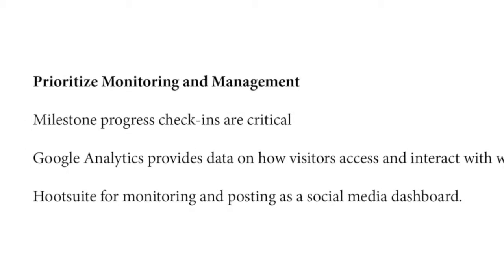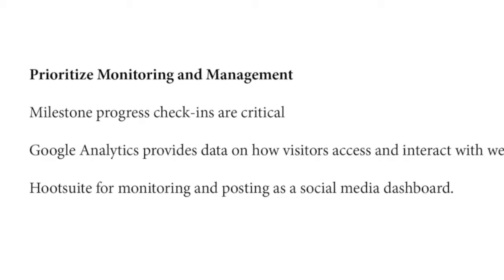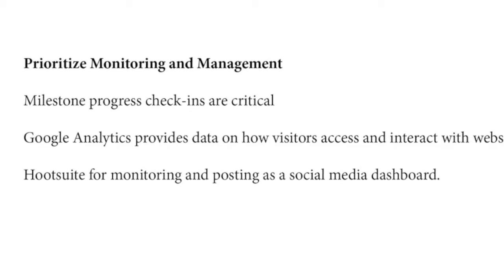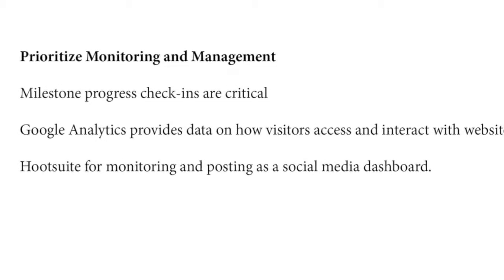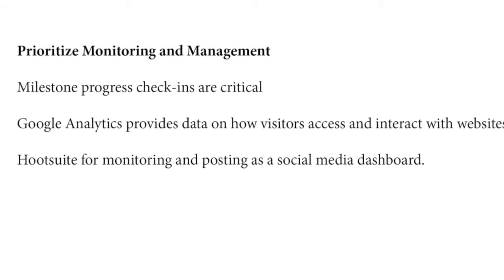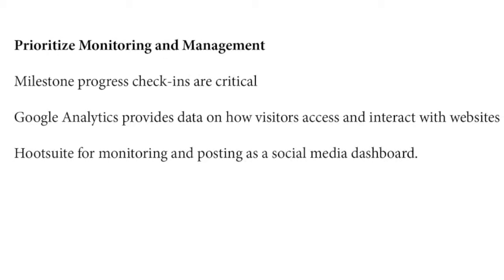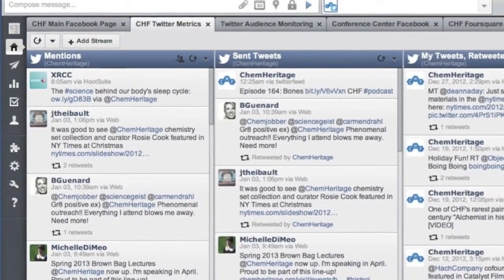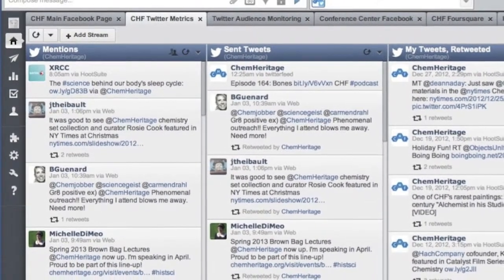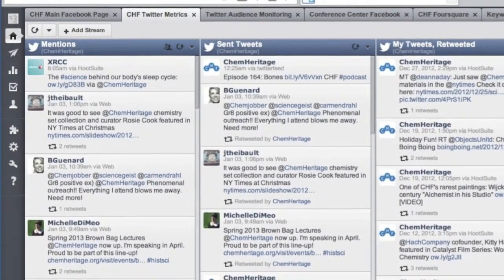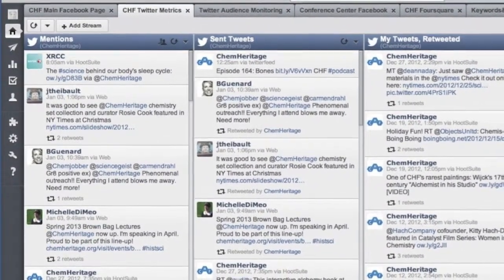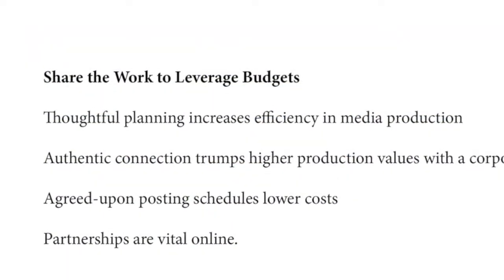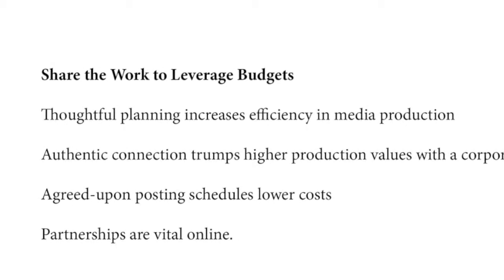Another commonality these organizations share is that they prioritized monitoring and management of their online engagement. Milestone check-ins are critical to the success of each project. Google Analytics is widely used for evaluation of website traffic, providing a deep level of data on how visitors access and interact with websites, including social media's impact on traffic. For social media monitoring and posting, Hootsuite was used by most of the organizations that engage on multiple platforms, allowing subscribers to collaboratively schedule posts, monitor social media engagement, and respond to audiences through one web-based interface. Costs for digital media initiatives vary widely, and the greater time put into crafting the plan, the more efficient it will be in the long term.